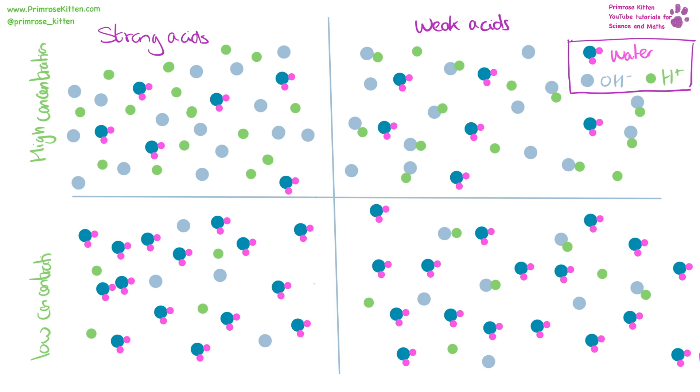For our weak acids, they are only partially dissociated, so some of the hydrogen and hydroxide ions are separated and some of them haven't, meaning that we are going to get some which are still together and some which are separated. At a high concentration, there are going to be lots of acid particles for very few particles of water, whereas at a low concentration, there aren't going to be very many acid molecules per molecule of water.